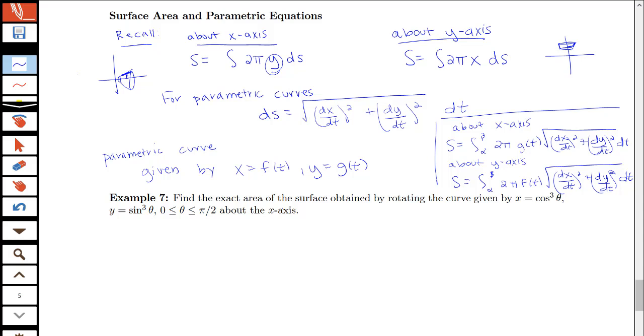So let's look at an example. I'm interested in finding the exact area of the surface obtained by rotating the curve given by x equals cosine cubed θ, y equals sine cubed θ, for θ between 0 and π/2 about the x-axis. So this is the same curve that we had in the previous example where we found the arc length of the whole curve was just 6, but now I'm taking just the portion of the curve between 0 and π/2.